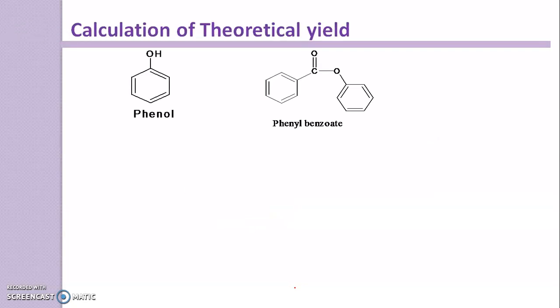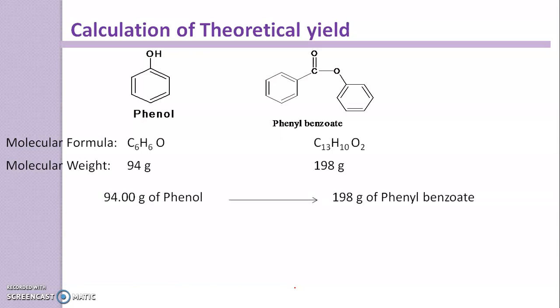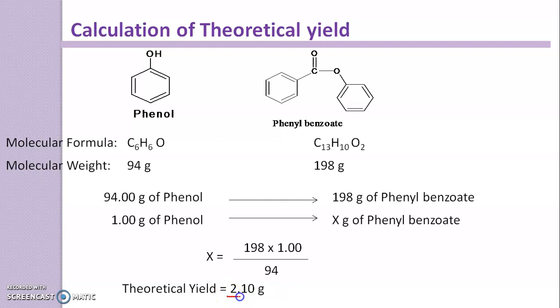Now next is the calculation of theoretical yield. Draw the structure of phenol (reactant) and phenylbenzoate (product). Write down the molecular formula and calculate the molecular weight. This indicates that 94 grams of phenol gives 198 grams of phenylbenzoate. So 1 gram of phenol gives how much phenylbenzoate? Make a cross multiplication and the value you get is your theoretical yield.